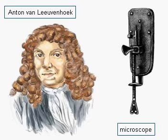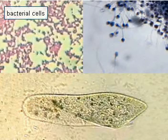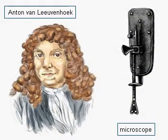The microscope of Anton van Leeuwenhoek enabled him to discover the extraordinary world of microorganisms. He observed bacterial cells, sperm cells, and ciliates. He sent detailed descriptions of his observations to the Royal Society of London. Although he used the language of simple people, his descriptions aroused the interest and admiration of scholars, and they accepted Leeuwenhoek into their society.